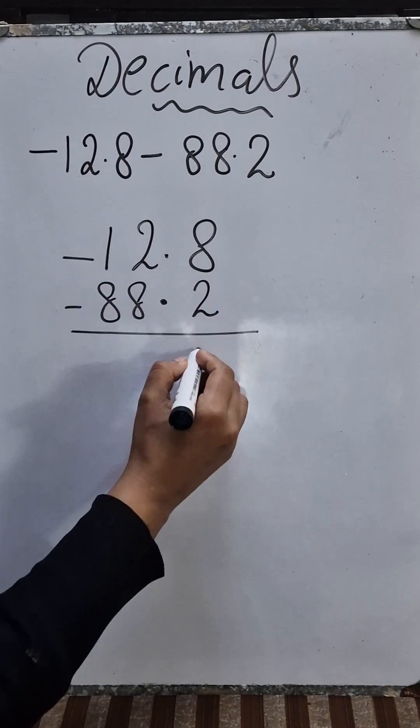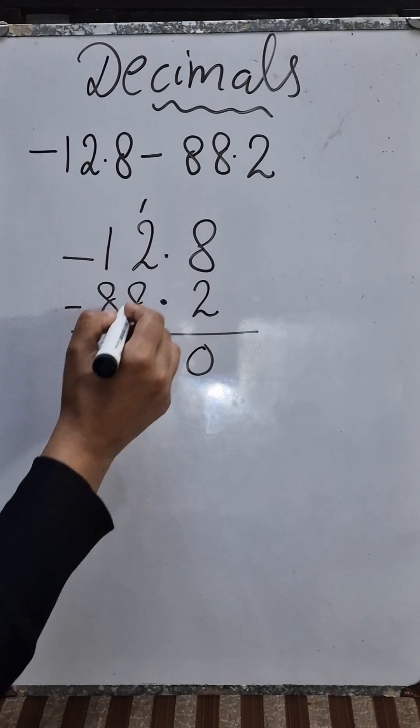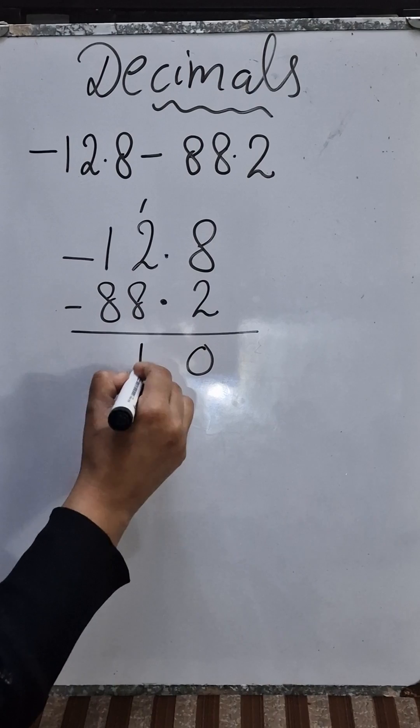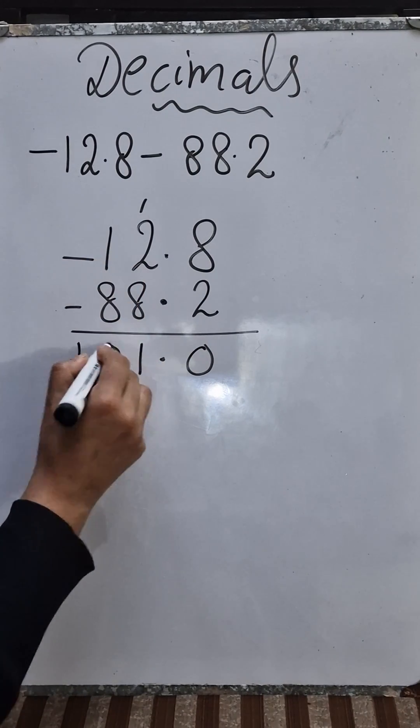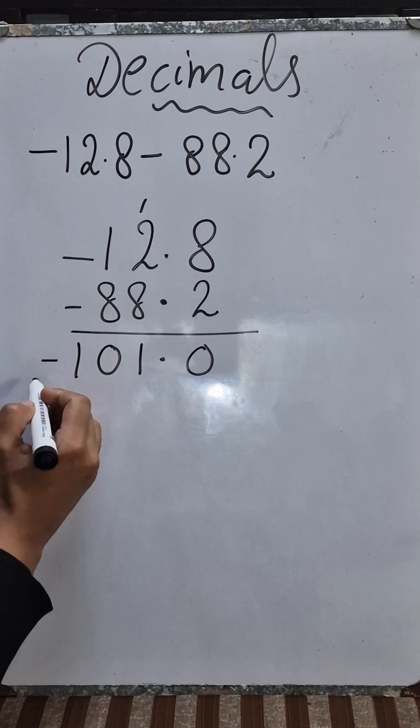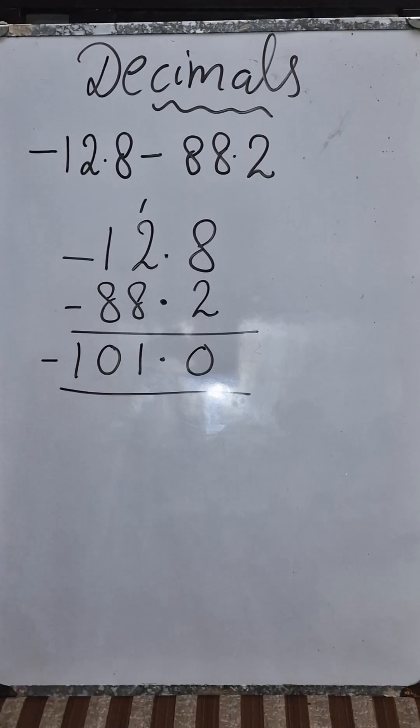8 plus 2 is 10, carry 1. 9, 10, 11, carry 1. Decimal will come over here. 9 and 1 is 10. Now you are going to write the bigger number sign, so minus 101.0 is the answer.